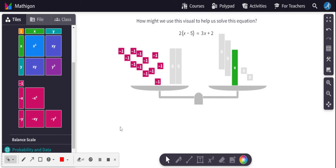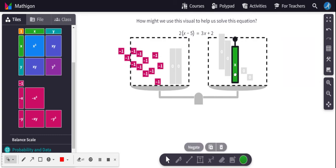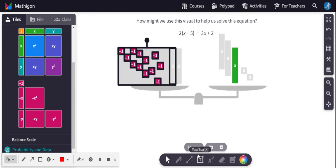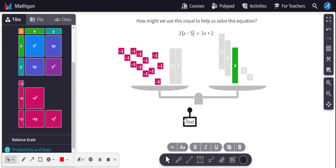Now we know that x is equal to these 12 units here. Therefore, the answer is x equals negative 12.